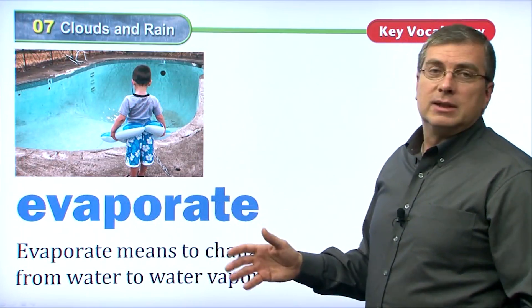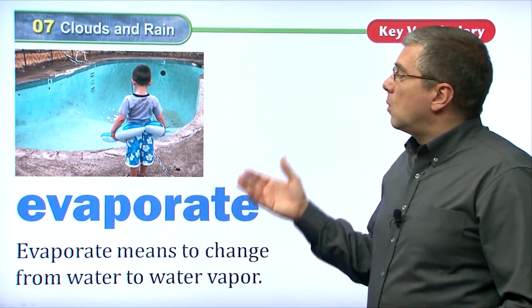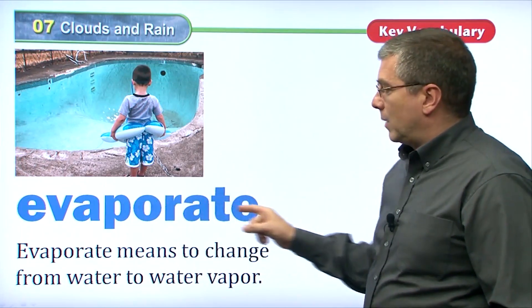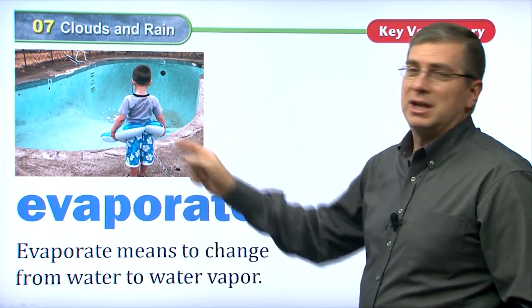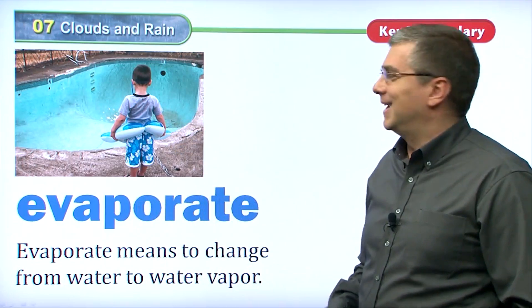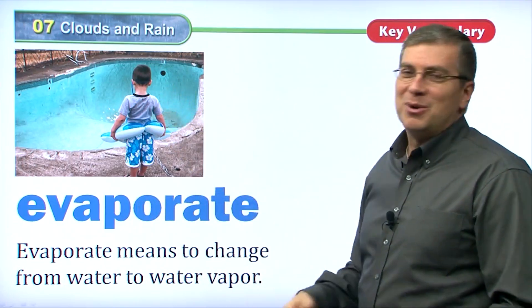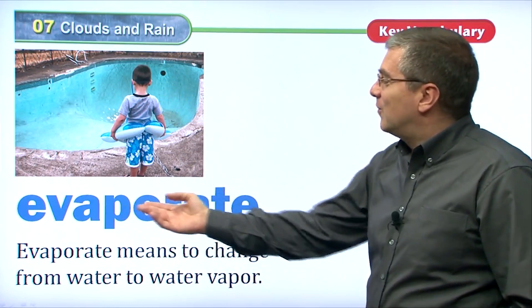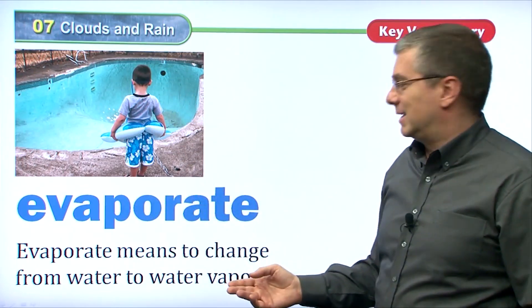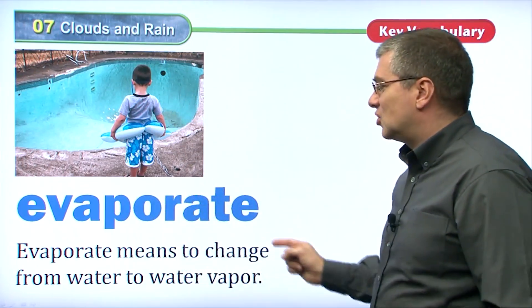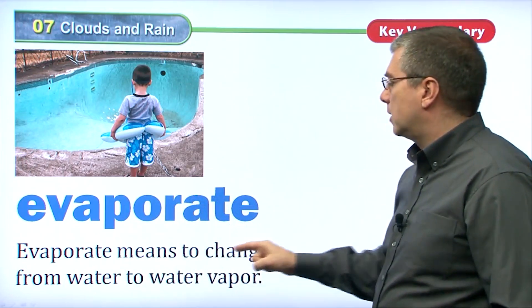Now, how do clouds form into the sky? Well, water has to evaporate. Poor kid, where did all the water go? He wants to go swimming, but all the water's gone. Where did it go? It evaporated.